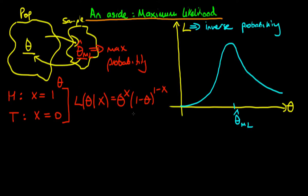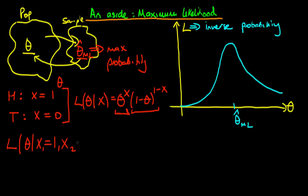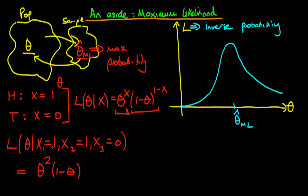If x equals one, the second expression is to the power zero, so we just get theta — the probability of a head, which makes sense. If x is zero, the first part becomes one, so we get one minus theta, which is the probability of tails. Note that we're holding x fixed and varying theta — again showing why likelihood is an inverse probability. Now, let's say our first throw was a head, the second also a head, and the final throw was tails. Assuming a random sample, observations are independent, so we get the overall likelihood by taking the product of the individual likelihoods.